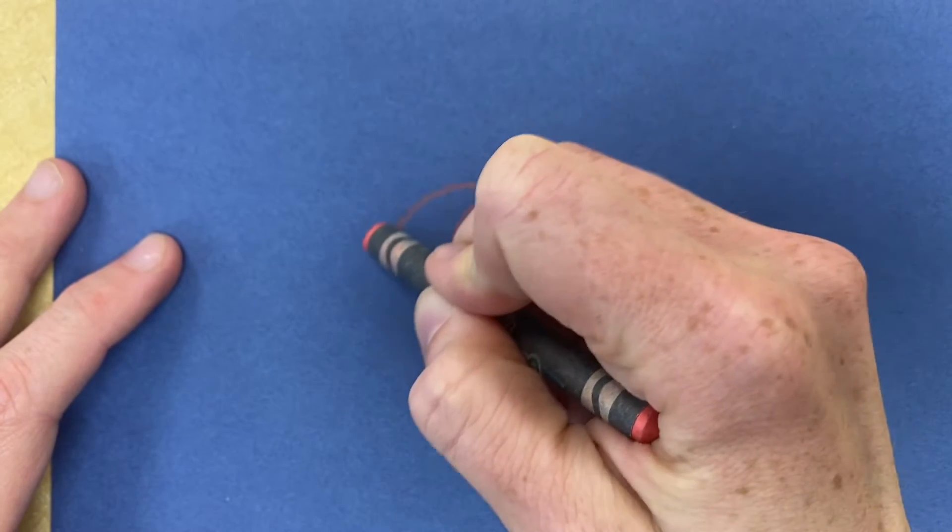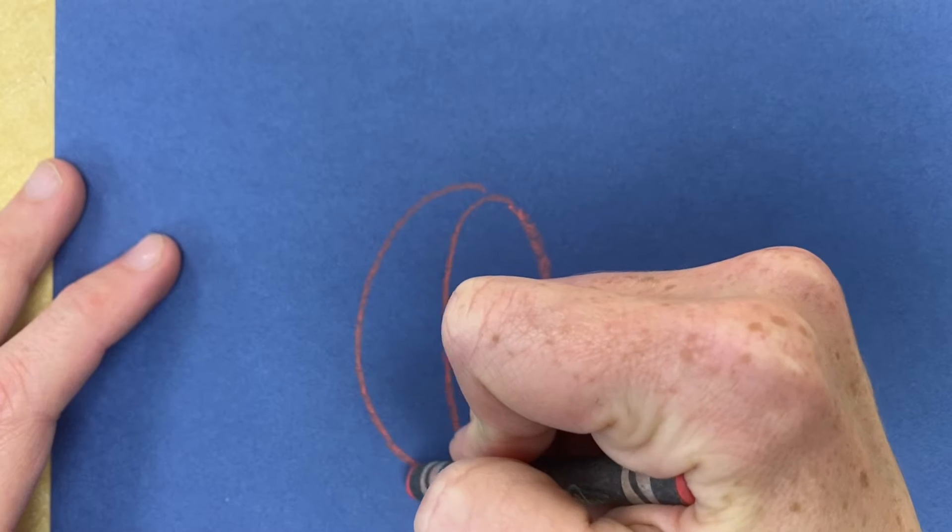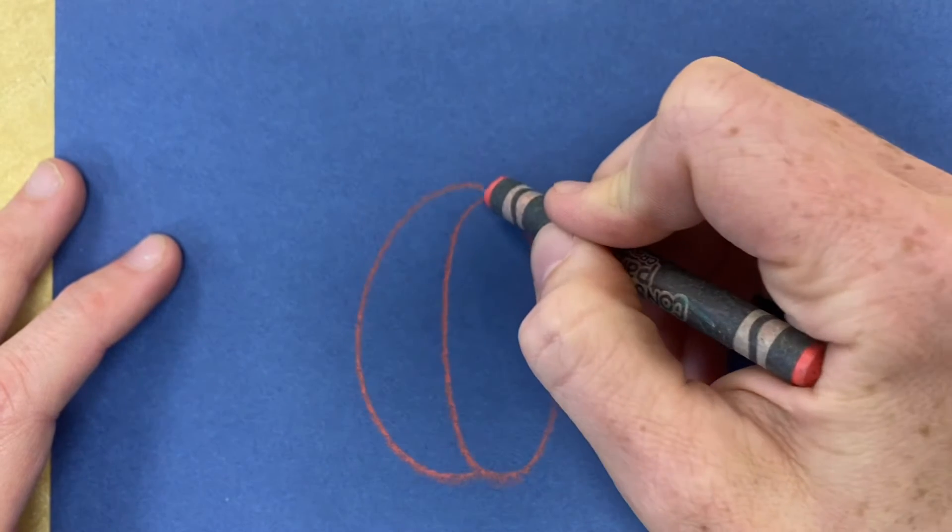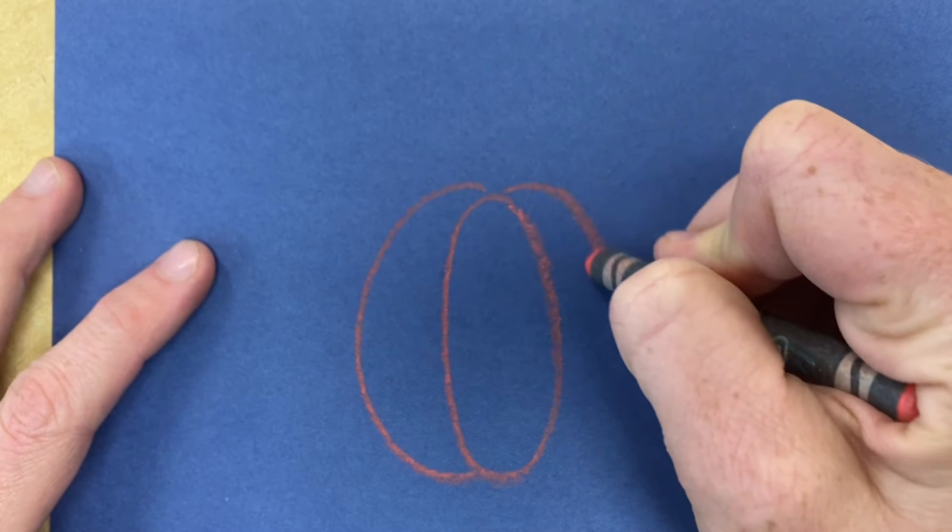The next step is to add a curved line on the side that will look kind of like a banana. Now add another banana on the opposite side.